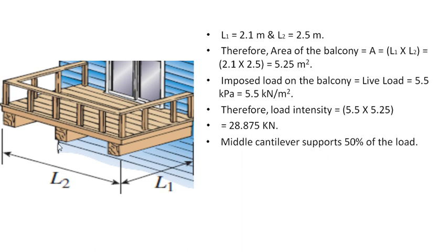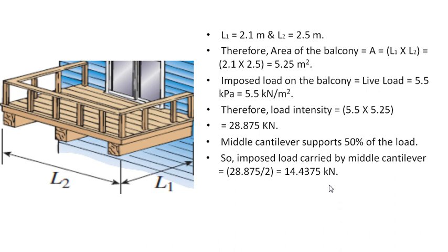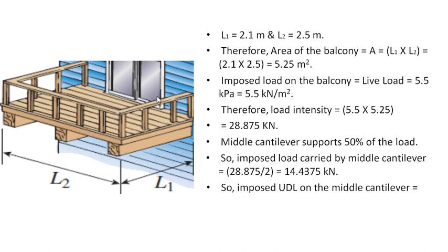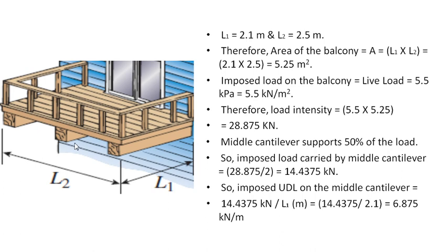The middle cantilever supports 50% of the load. Therefore, the imposed load carried by the middle cantilever is 28.875 / 2 = 14.4375 kN. The uniformly distributed load (UDL) on the middle cantilever is 14.4375 / 2.1 = 6.875 kN/m.